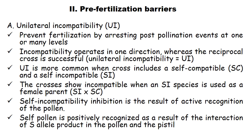Coming to pre-fertilization barriers: unilateral incompatibility (UI) is the first one. This prevents fertilization by arresting post-pollination events at one or many levels. Incompatibility operates in one direction whereas the reciprocal cross is successful. UI is more common when the cross includes a self-compatible and a self-incompatible species. Crosses show incompatibility when a self-incompatible species is used as the female parent, meaning the incompatible progeny will be obtained.